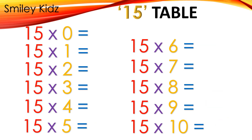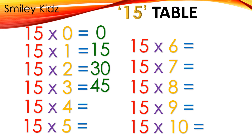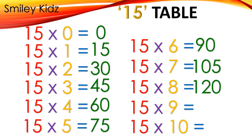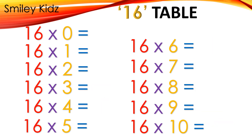Table 15: 15×0=0, 15×1=15, 15×2=30, 15×3=45, 15×4=60, 15×5=75, 15×6=90.